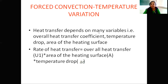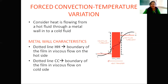Heat transfer in forced convection depends on many variables: the overall heat transfer coefficient, temperature drop, and area of the heating surface. The rate of heat transfer can be determined using this equation: rate of heat transfer equals overall heat transfer coefficient multiplied by area of the heating surface multiplied by temperature drop. To understand more, I will explain an experiment for you.